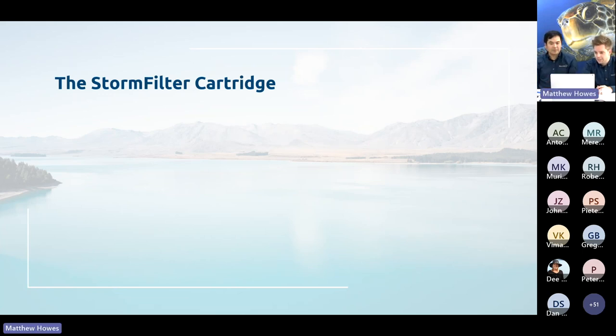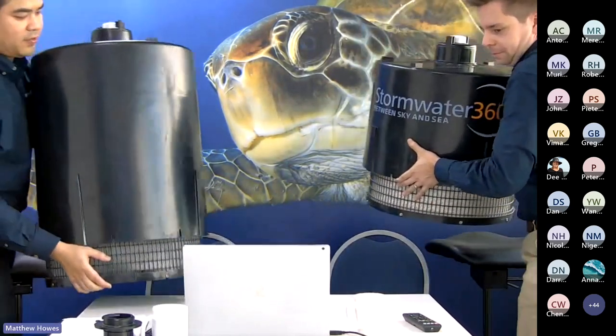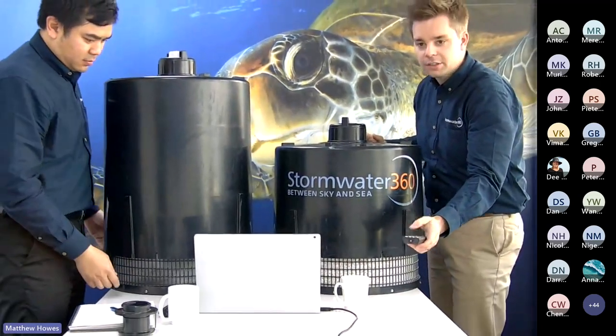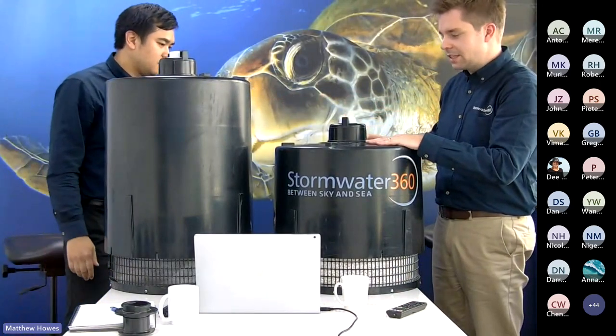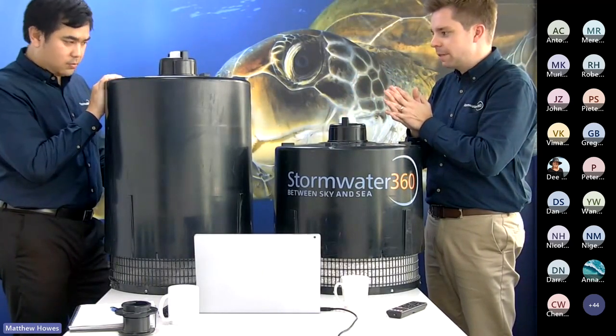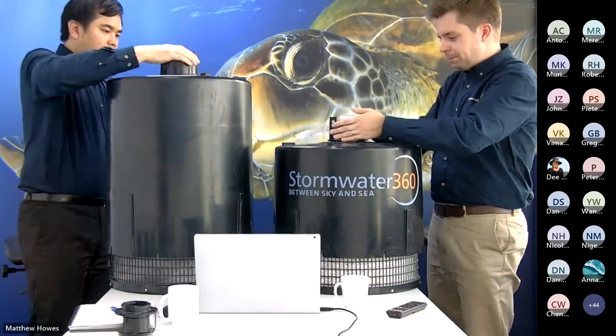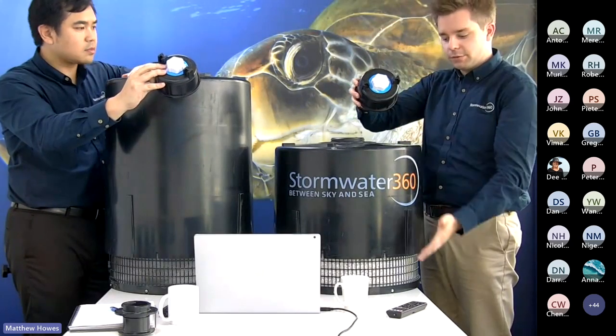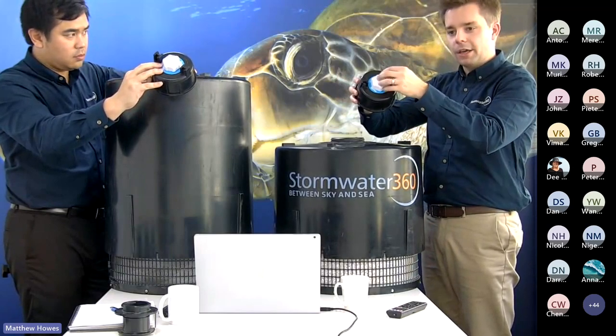Here we can now see the Storm Filter cartridges themselves. There are two different height cartridges: a 69cm cartridge and a 46cm cartridge, allowing treatment on sites with hydraulic restrictions. At the top of the cartridge is the one-way air valve — it allows air to escape as the device fills, but cannot re-enter once the siphon is broken. These are the hoods of the cartridges, which can simply be unscrewed and lifted off to inspect the media.